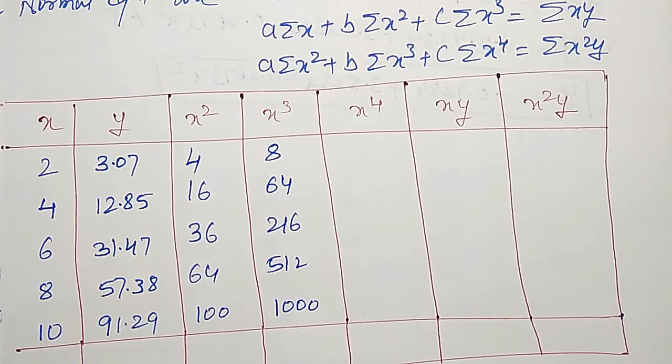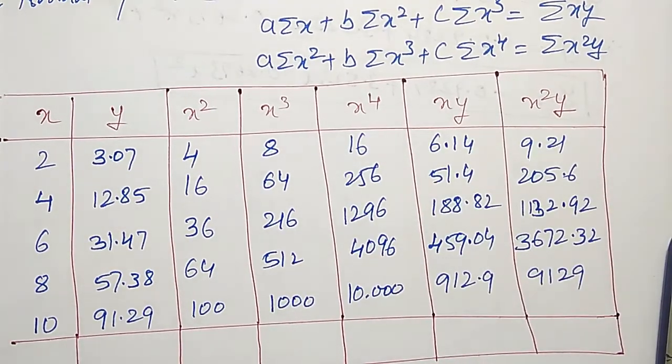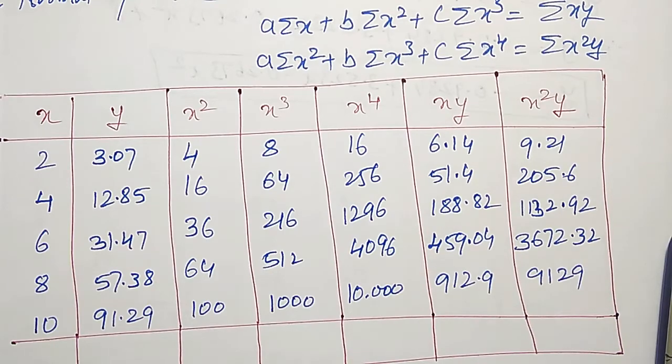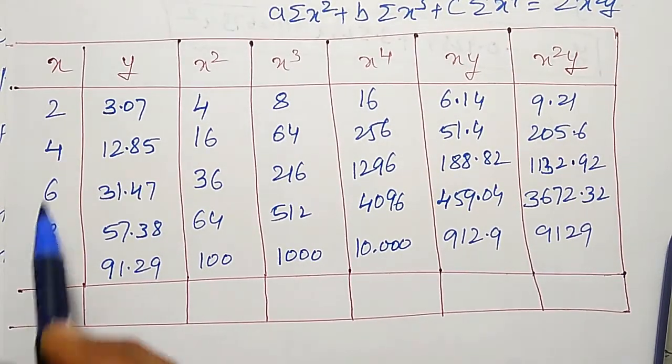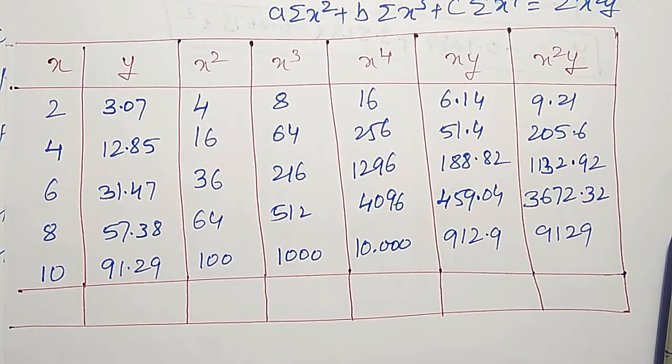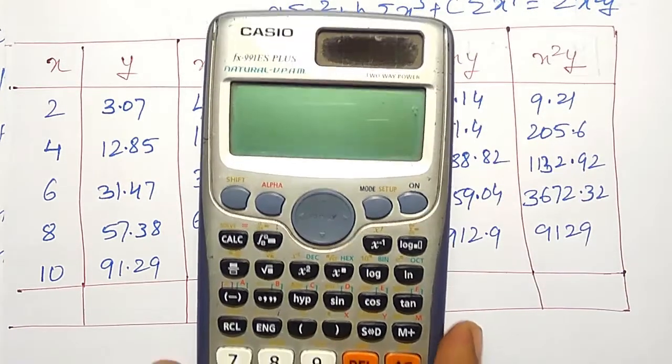10 cube is 1000. Like that, x raise to 4 column, xy column and x square y column I will prepare. In the examination, all these values I have to calculate. But to save the time, to find out these summations, I will use a different tactic here.